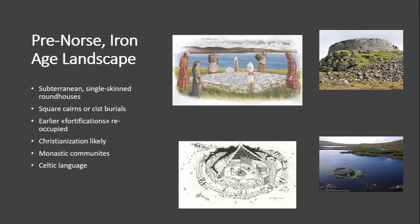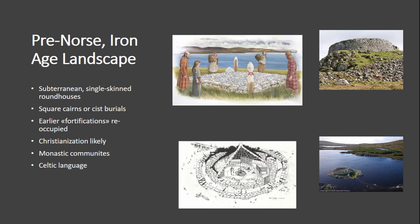Before I begin with the Viking Age landscape, I want to briefly discuss the pre-Viking Age landscape. The Pictish period is defined by subterranean, single-skinned, stone-foundation roundhouses. Burials before Christianization would be square cairns or cist burials. They also occupied earlier monuments such as brochs and dunes, built around the 1st century AD but reoccupied at various different times. Christianization is likely at this point, due to the presence of monastic communities, which we know through historical sources, place name data, and some sculptural evidence. The Celtic language was spoken in the Isles.